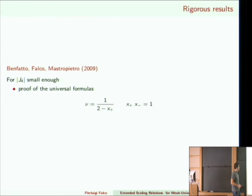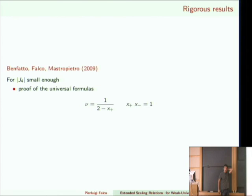In a paper with Benfatto and Mastropietro, we proved that both of these formulas — the scaling relation and the Kadanoff extended scaling formula — are indeed true, under the condition that J4, the coupling in front of the interaction between the two Ising models, is small enough.